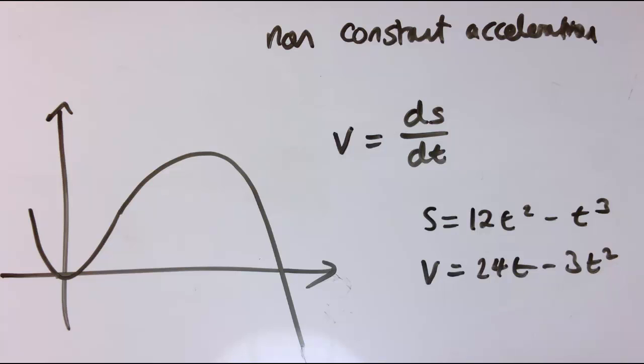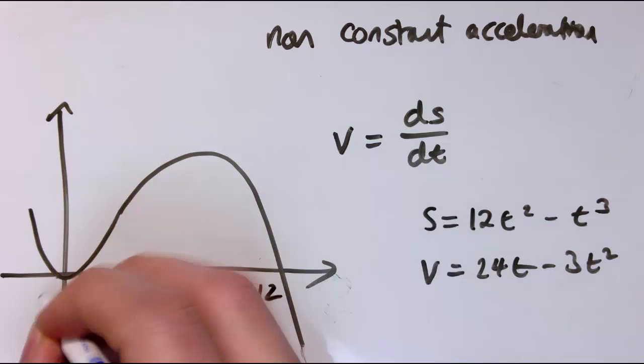Then the velocity would just be the derivative of the displacement. So I would get 24t minus 3t squared. So let's actually put that on here and see what it looks like. So if this was 12t squared minus t cubed, it would go through 12 here, another point here at zero.